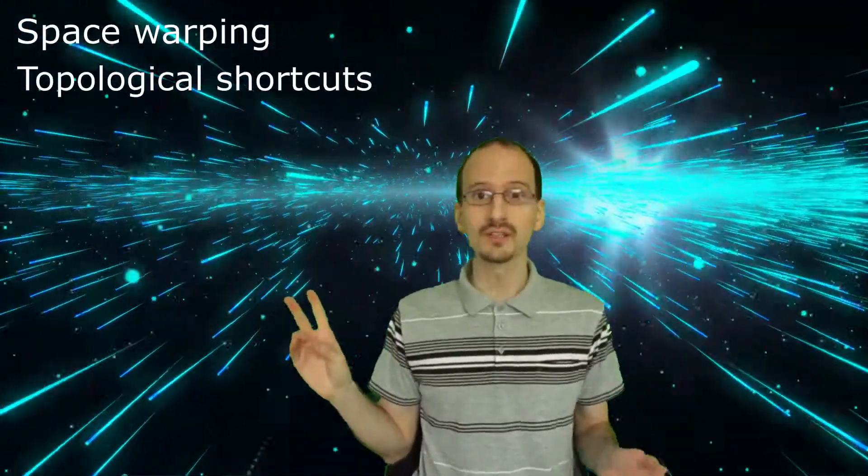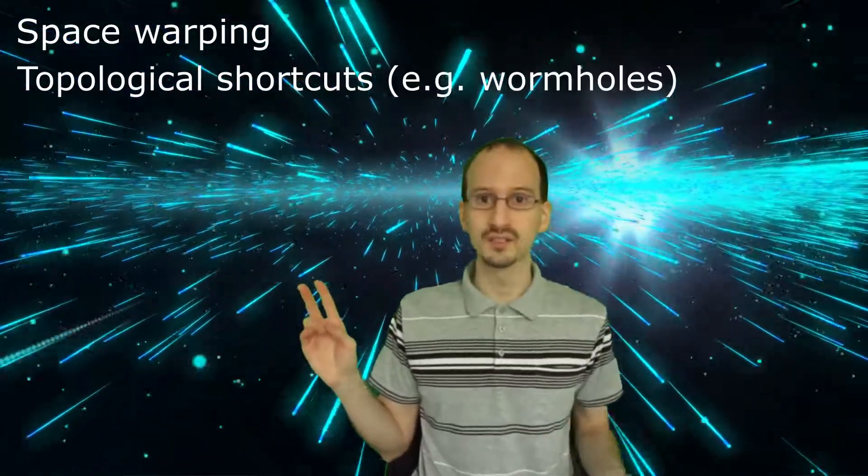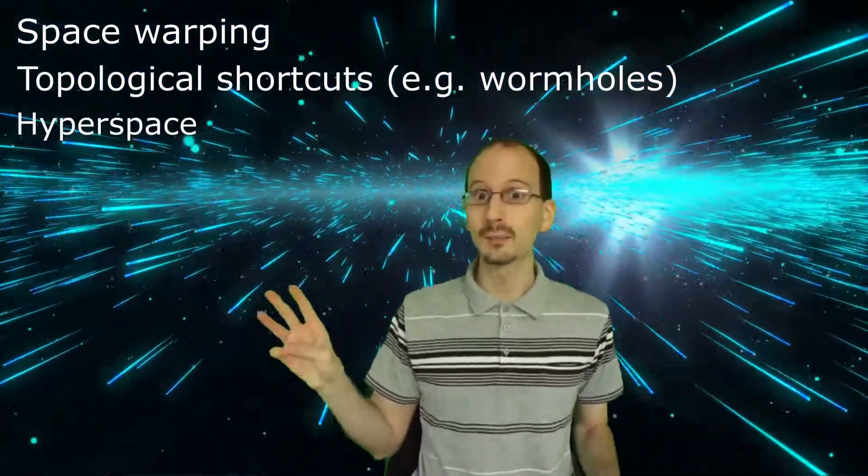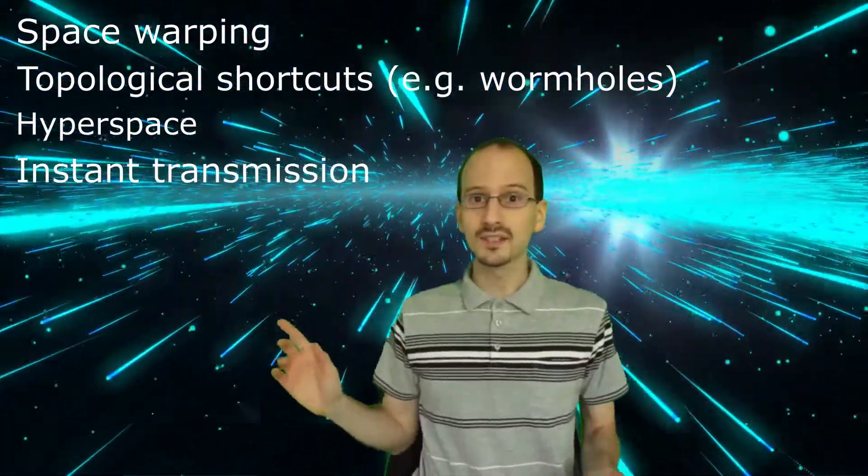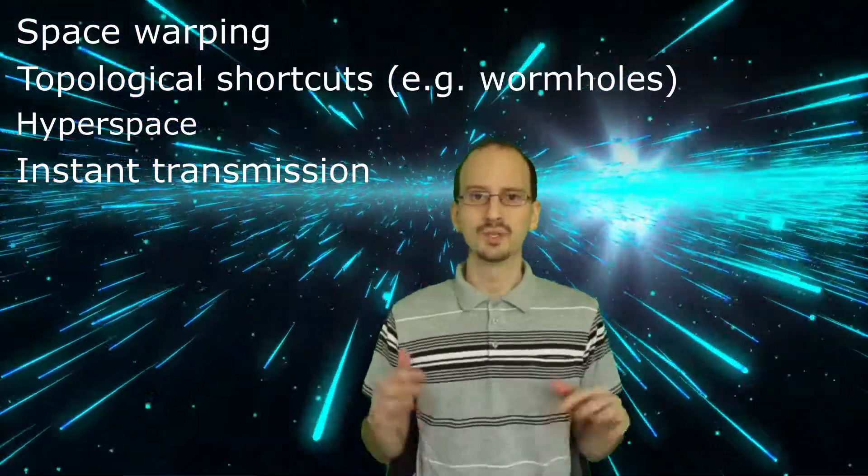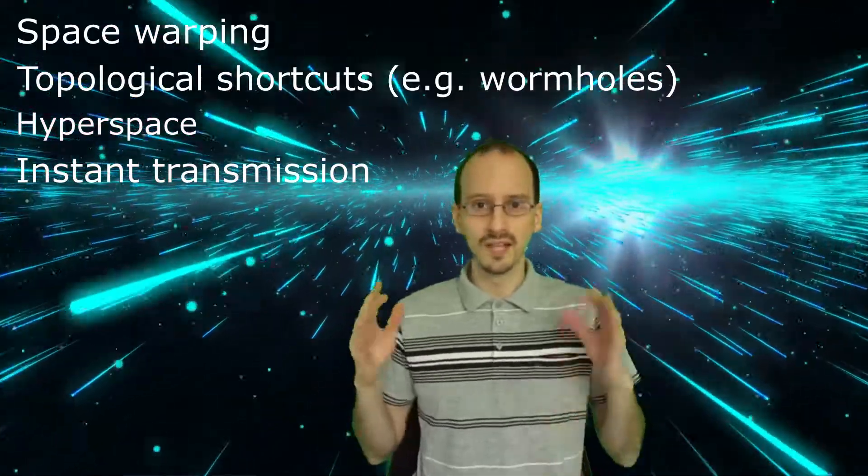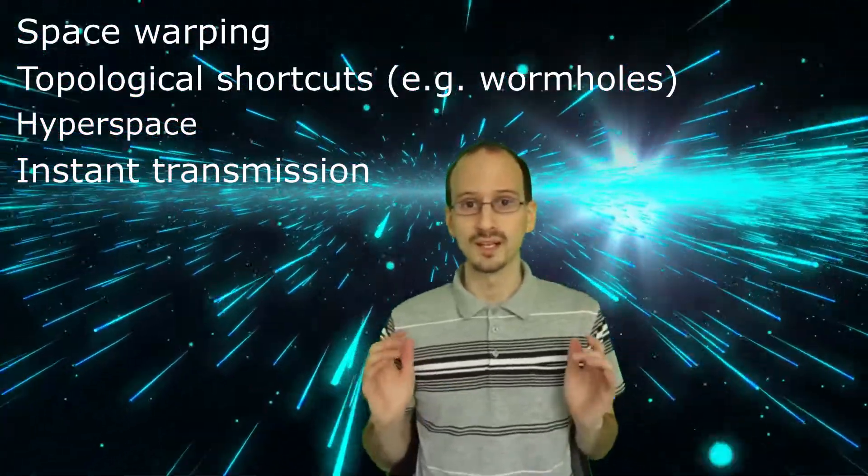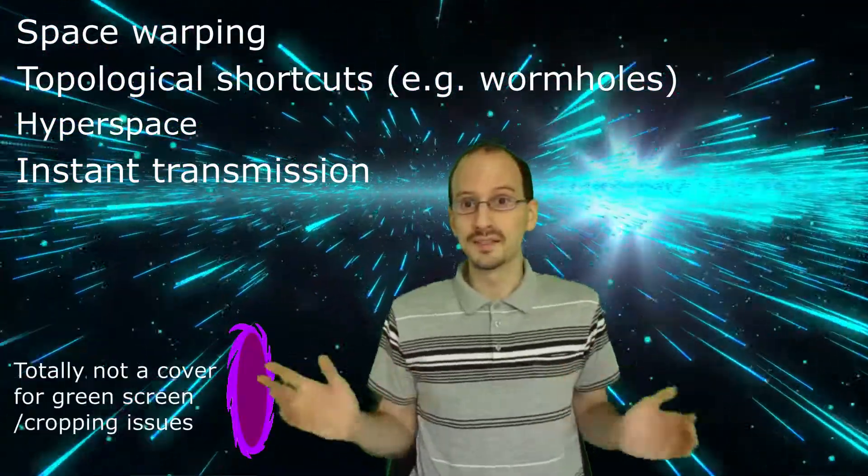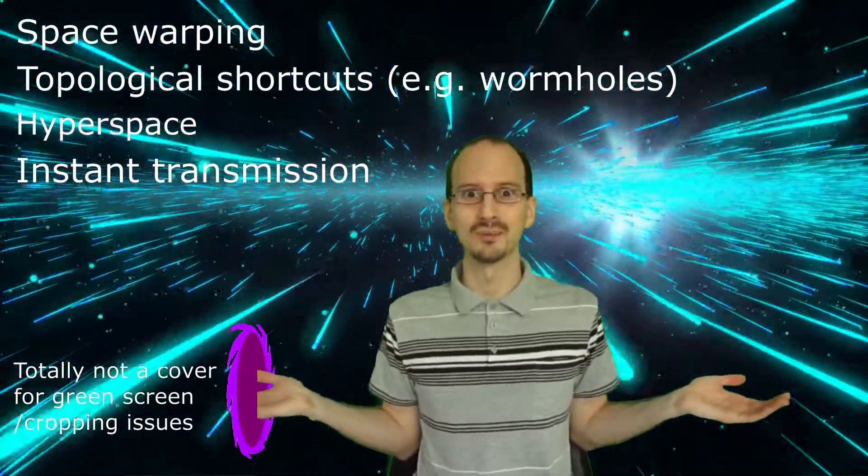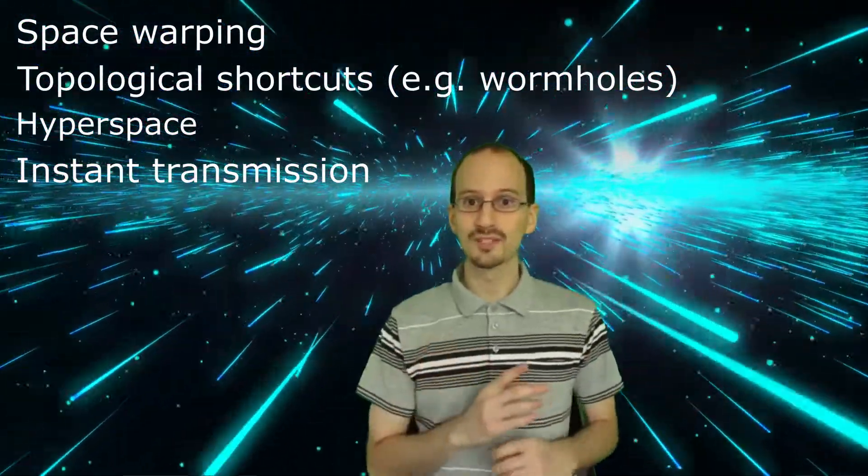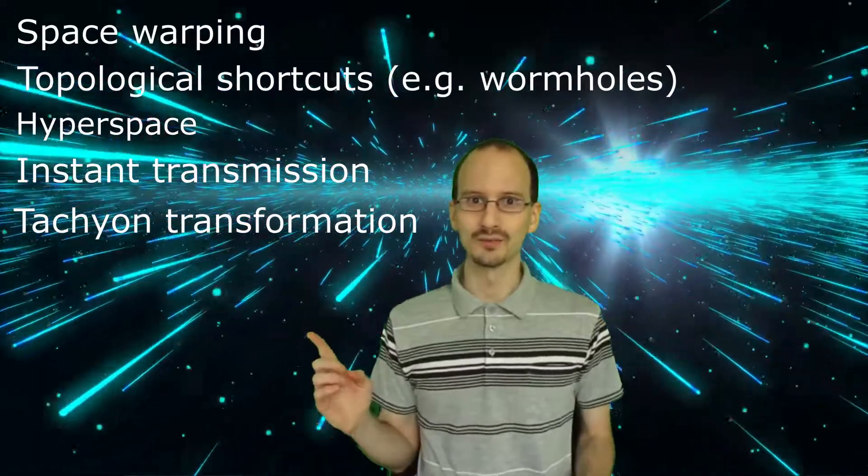In our very first video, we talked about methods of faster-than-light travel. We had space warping, topological shortcuts, which include but are not limited to wormholes, and hyperspace. We're going to add instantaneous transmission to that, which I left off the original list because in order for it to make sense, a lot of well-grounded things about known science would have to be wrong. But in science fiction, everything is on the table. And finally, our topic for today, tachyon transformation.